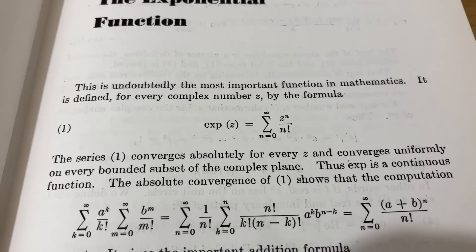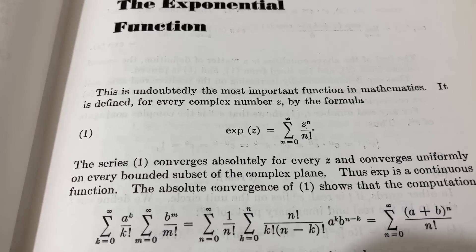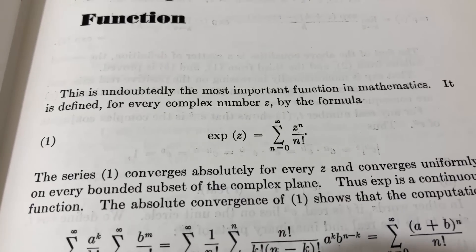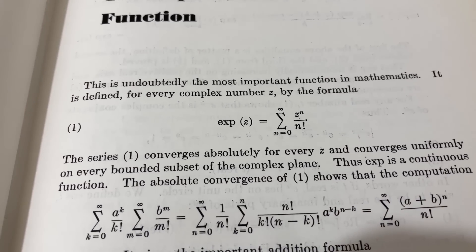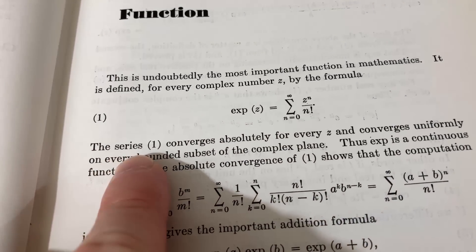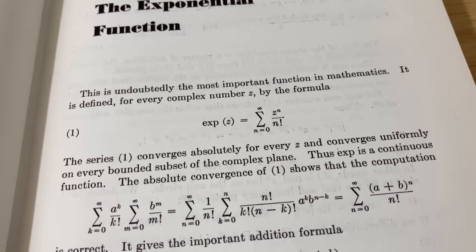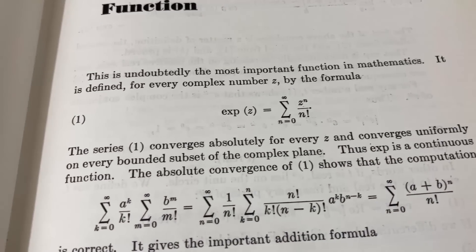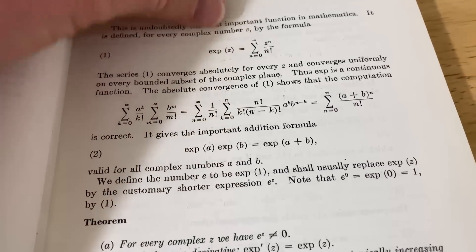Here it says this is undoubtedly the most important function in mathematics. It is defined for every complex number z by the formula. So that's the power series for e to the z. They're defining it that way via this series which converges. The series converges absolutely for every z and converges uniformly on every bounded subset of the complex plane. Thus it is a continuous function.